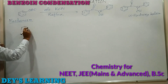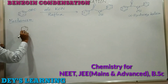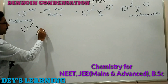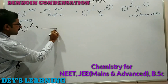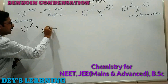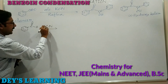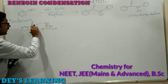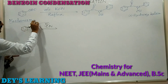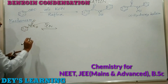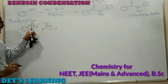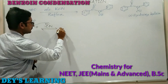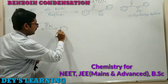Now let us discuss the mechanism of this reaction. We take the molecule benzaldehyde on treatment with potassium cyanide. The cyanide anion attacks the electrophilic center — the delta positive center — and this pi bond is broken, giving us an intermediate product.